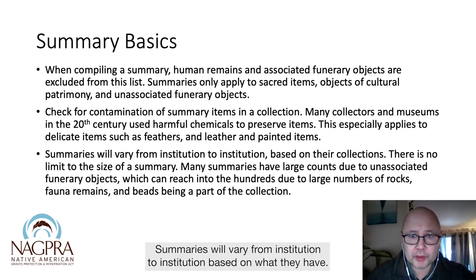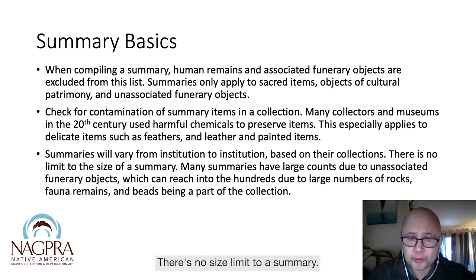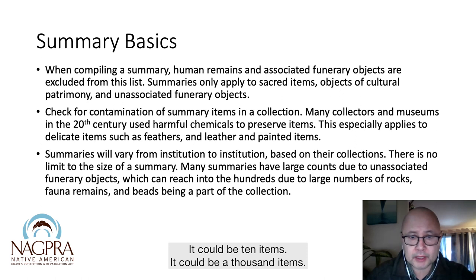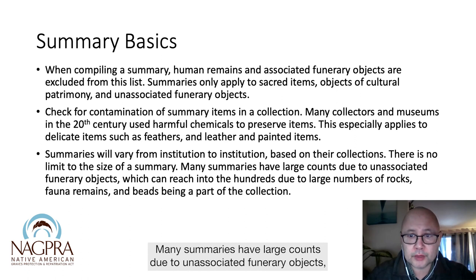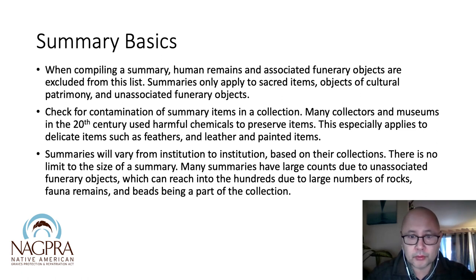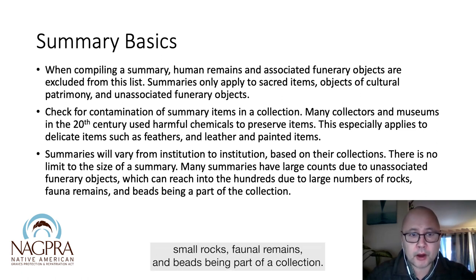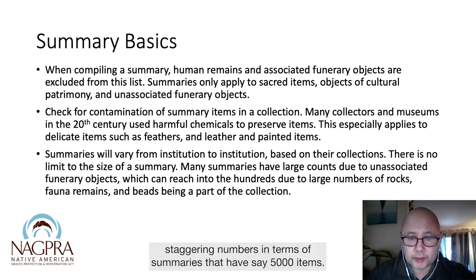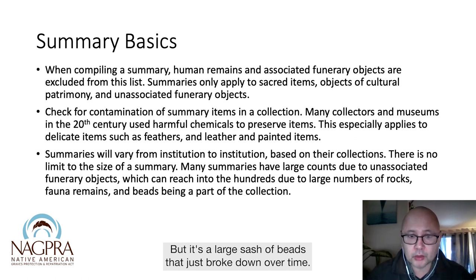Summaries will vary from institution to institution based on what they have. There's no size limit to a summary — it could be 10 items or a thousand items; it just depends on your museum. Many summaries have large counts due to unassociated funerary objects, which could reach into hundreds or even thousands due to small rocks, fauna remains, and beads being part of a collection. I've seen some pretty staggering numbers — say 5,000 items — but it's a large sash of beads that broke down over time with 500 individual beads counted as unassociated funerary objects.